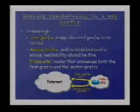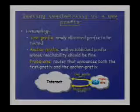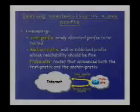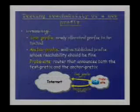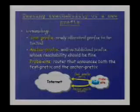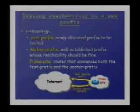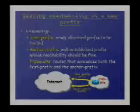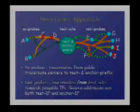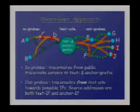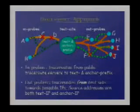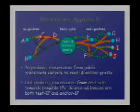The test prefix might be 96.0.1.1 and the anchor prefix might be 147.28.0.35 — those are actual examples, not hypotheticals. The probe site is a rack at the Westin, a multi-home site. It's got a machine connected to the Internet from both those prefixes. There are two classes of probes: in-probes, which are probes coming from out on the Internet being sent to both the test and anchor prefixes.